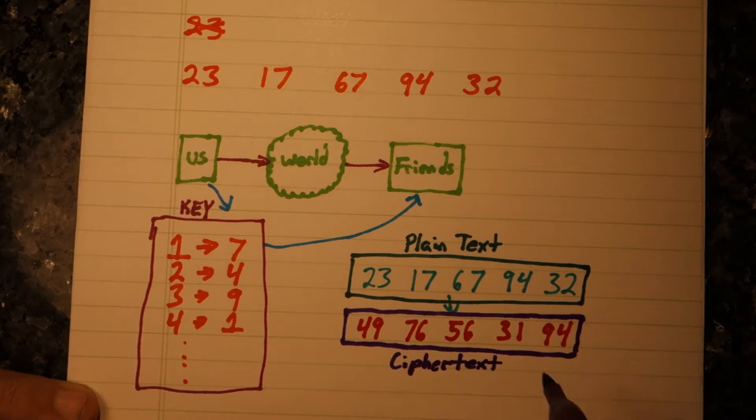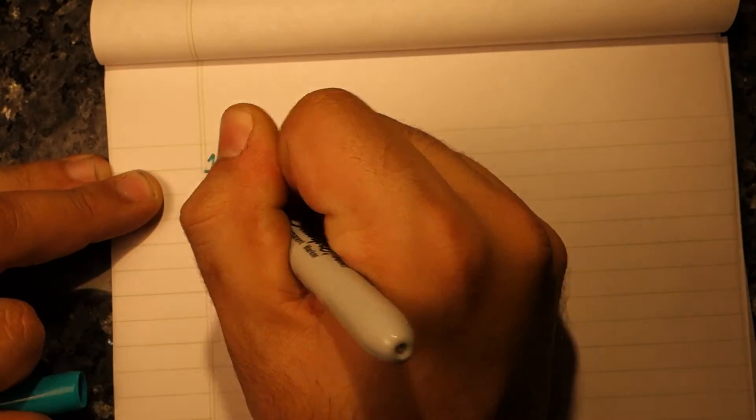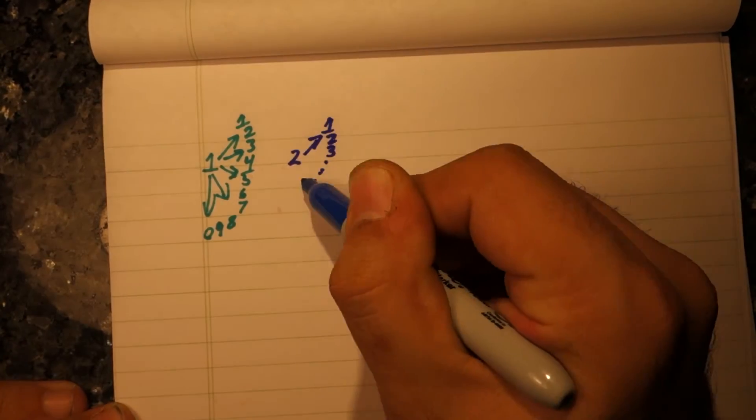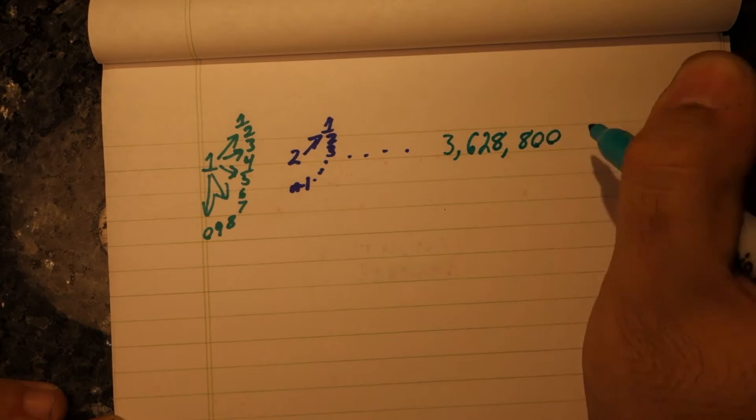But how secure is it? Well, there are only about 3 million possible mappings. And since we have no idea what the data may mean, we can never know if we have the right one.